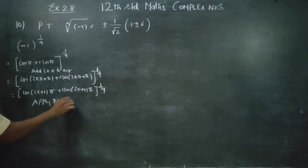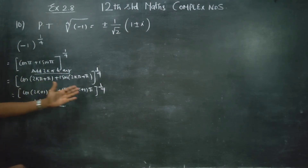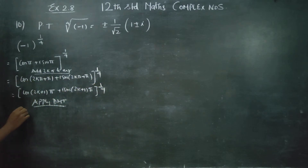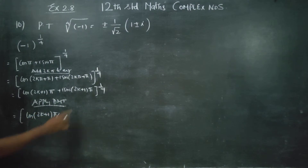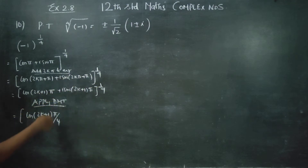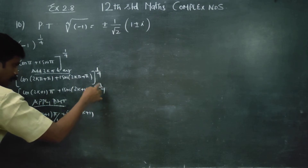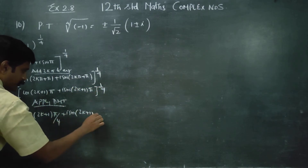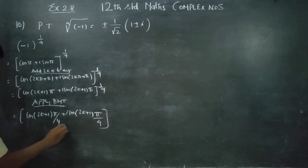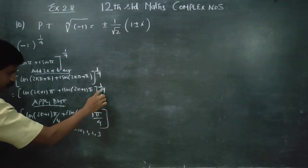Now apply De Moivre's theorem. The general formula gives: cos((2k+1)π/4) + i·sin((2k+1)π/4), where k = 0, 1, 2, 3 (i.e., k = 0 to n−1).